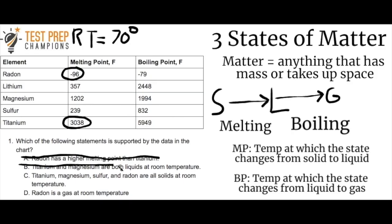Just for completeness, let's also check titanium. Titanium's melting point is 3038 degrees Fahrenheit — the temperature at which it goes from solid to liquid. At 70 degrees room temperature, we're nowhere near that melting point, so titanium is also a solid. Answer B — that they're both liquids at room temperature — is completely false. They're both solids.